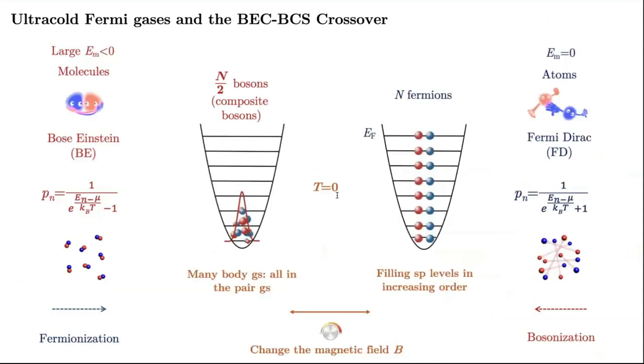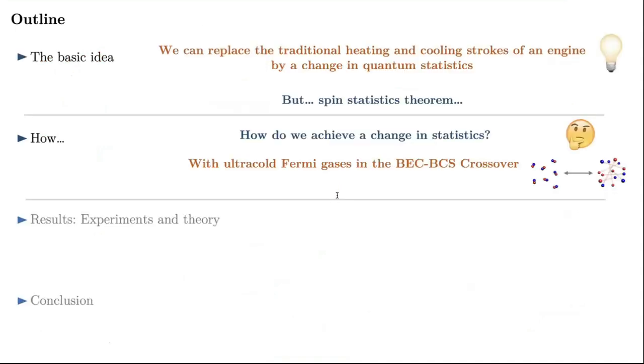For us, the most important point is that when the fermions are in the molecular state, they form these composite bosons that follow Bose Einstein statistics. And, then, the ground state of the system at zero temperature will have all the pairs in the ground state, which will be a condensate. When the molecule breaks, then the fermions, the fermionic character of the particles, arises, and the atoms follow fermionic statistics. So, the ground state of the system will have one fermion of each species in each one of the energy levels up to the fermionic energy. So, in a very simplified picture, we can, by moving or changing the magnetic field, we can use the fermionic statistics or the bosonic statistics of the system. So, that means that the change in statistics we were looking for can be realized with ultracold fermionic gases in this crossover.